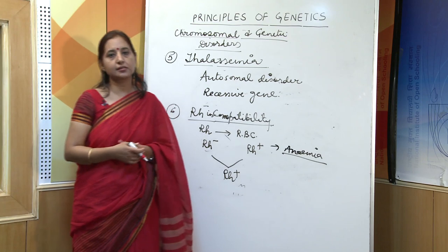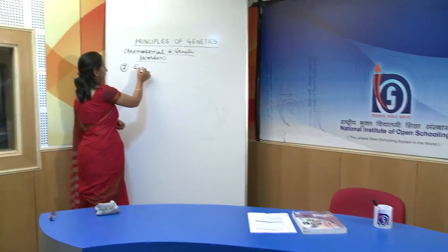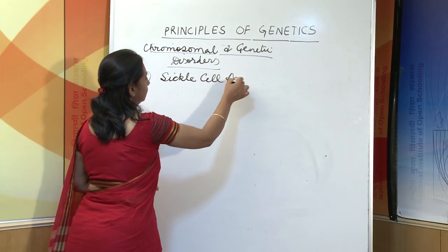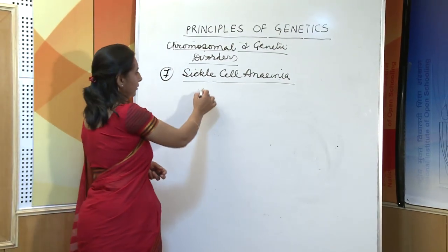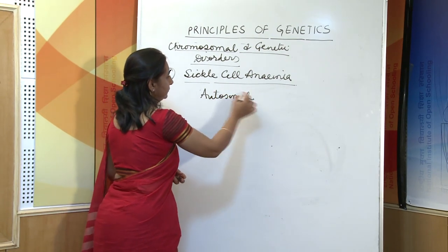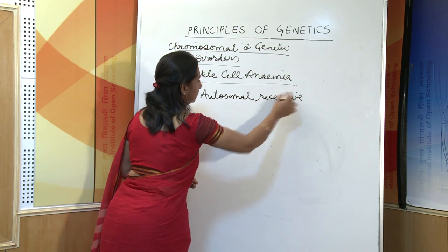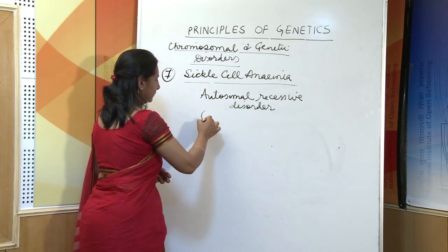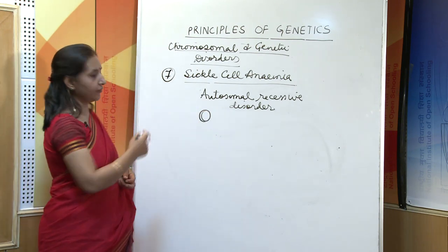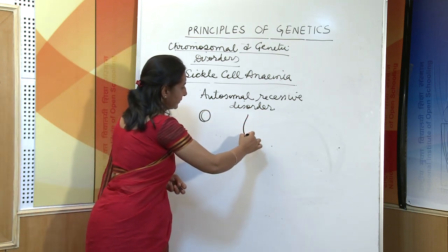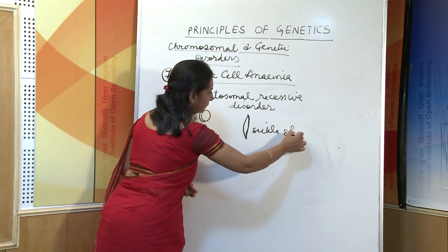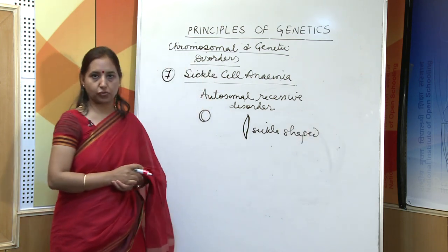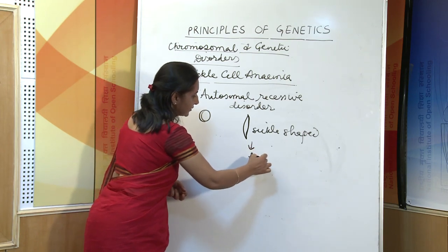The next disorder is sickle cell anemia. This is also an autosomal disorder caused by a recessive gene. The shape of normal RBCs is biconcave, but due to the defective gene, the shape of the RBCs becomes sickle-shaped. As a result, they are destroyed due to low oxygen tension and the person suffers from anemia.